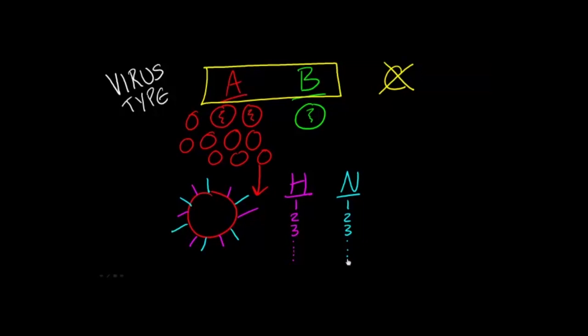So when a virus replicates, its genome is going to determine what kinds of H and N proteins will show up on the surface of the virus. So you can imagine that there are a lot of different combinations of these viruses. So H1N1 could be a potential combination, maybe H3N2, and so on. And actually H1N1 and H3N2 are the subtypes that we see in humans today.